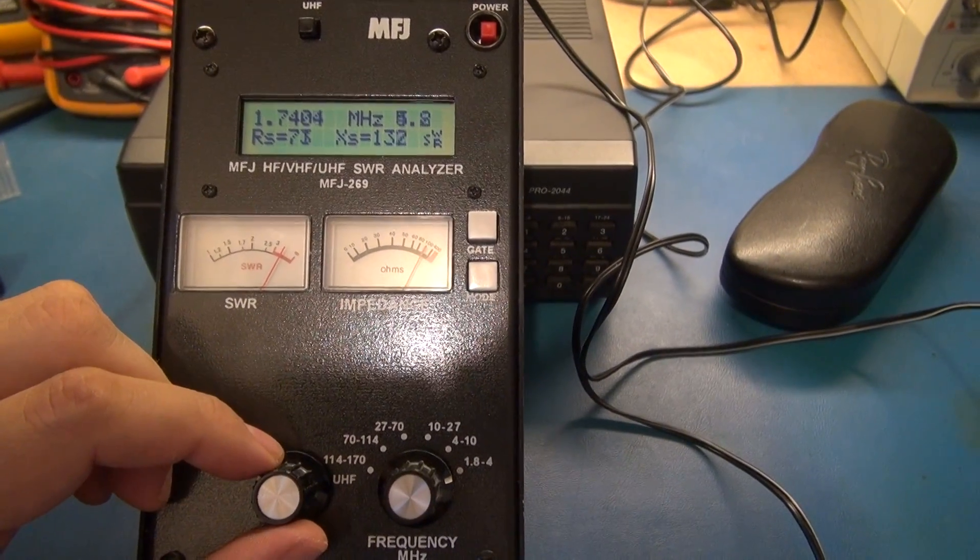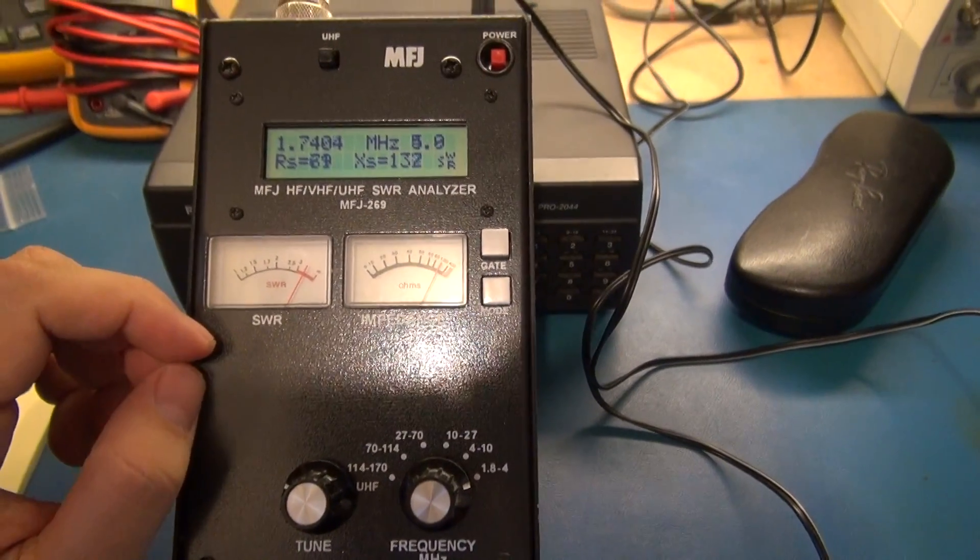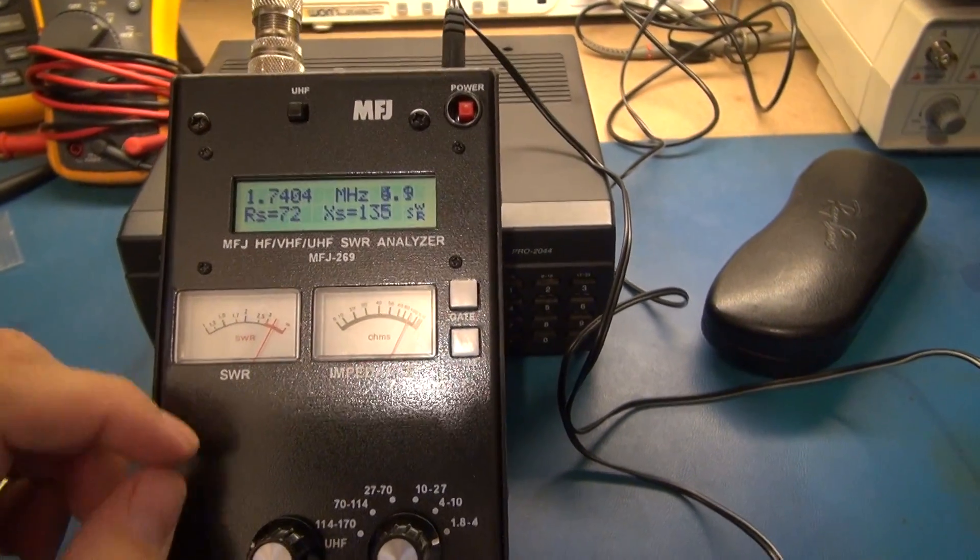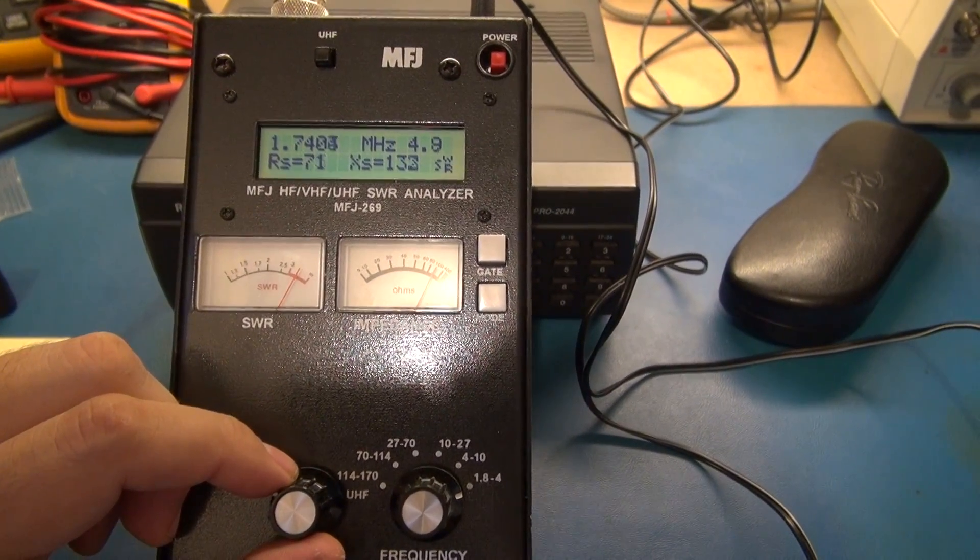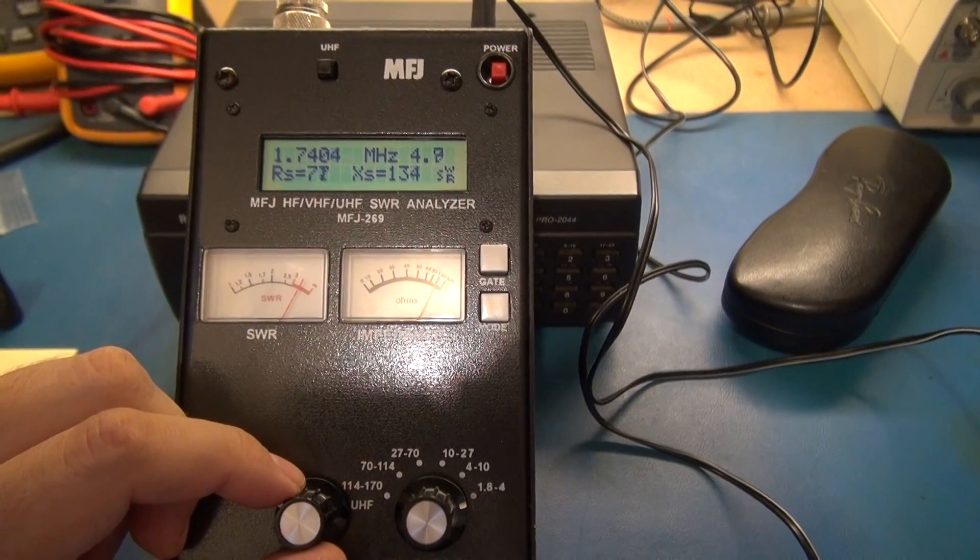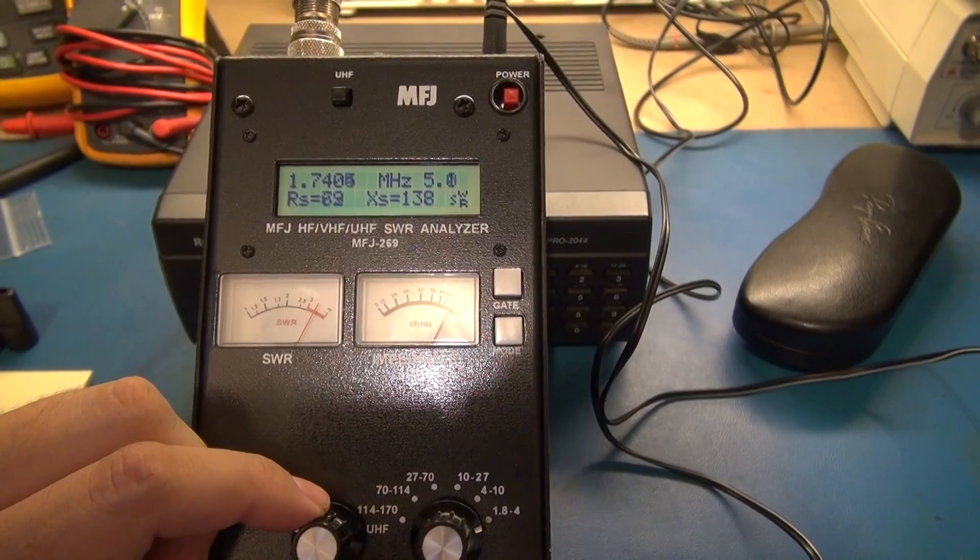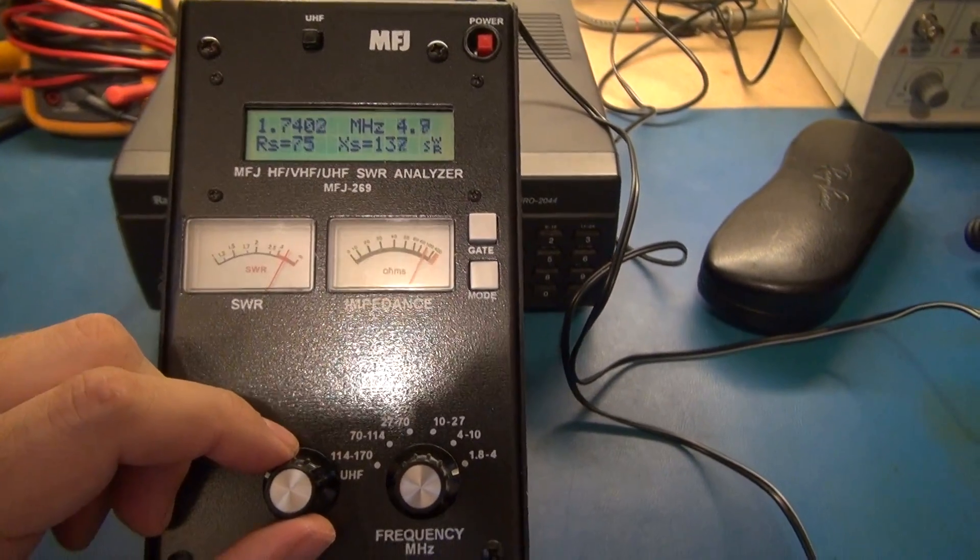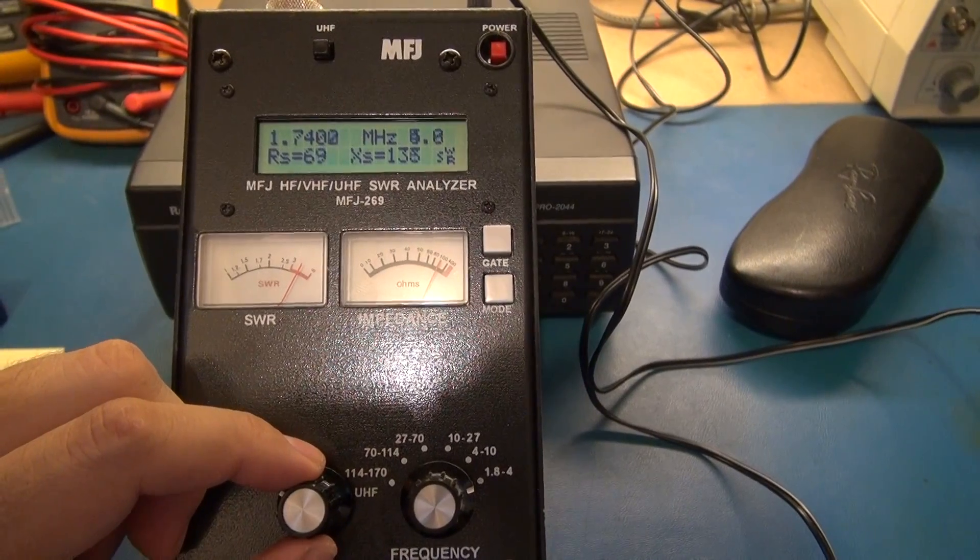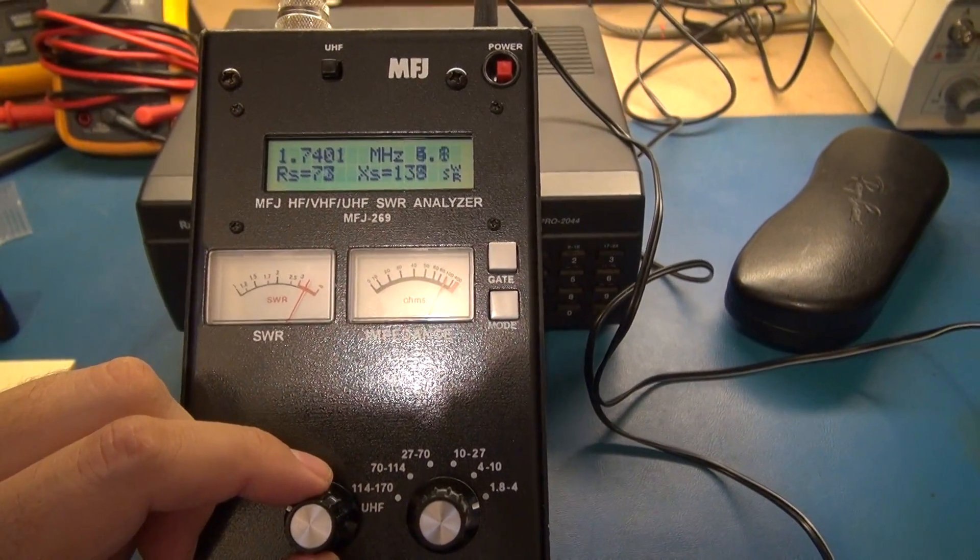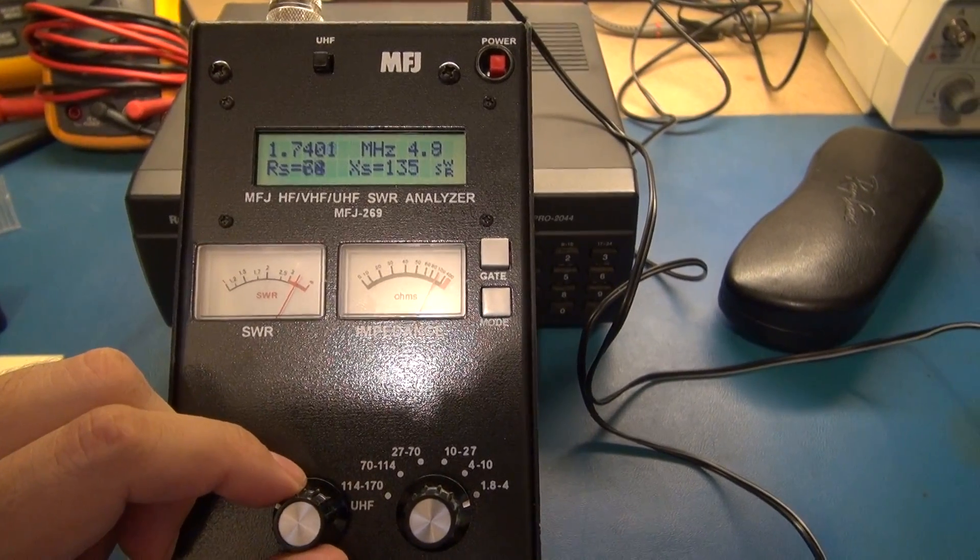All right, what I thought I would do is a frequency sweep with my analyzer, my MFJ-269, frequency sweep on my G5RV cut for 80 meters. I think the total length is 102 inches across the whole antenna. It's fed with about 30 feet of ladder line, and I do have a homemade current choke, ugly balun, whatever you want to call it.